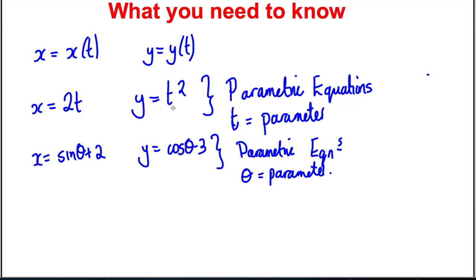Next, what's quite important, these are called the parametric equations. Sometimes you're asked questions to find the Cartesian form. Now, the Cartesian form is the equation with just x and y, and the parameter is eliminated. Parameter eliminated.